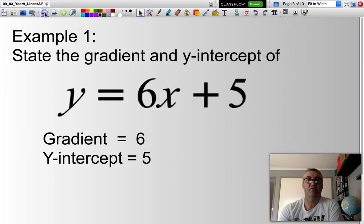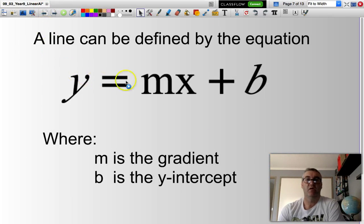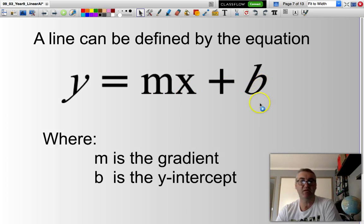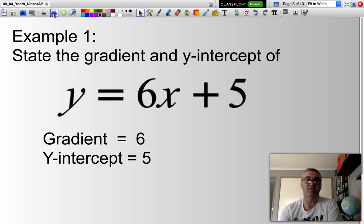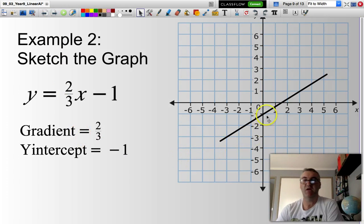Just to summarize, a line can be defined by the equation y equals mx plus b. Some other books will represent this equation as y equals mx plus c. The b and the c mean the same thing. M is the gradient, in other words the slope. B is the y-intercept.